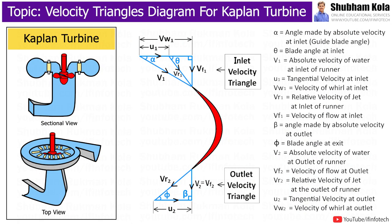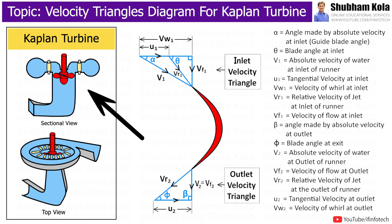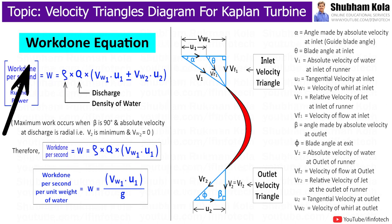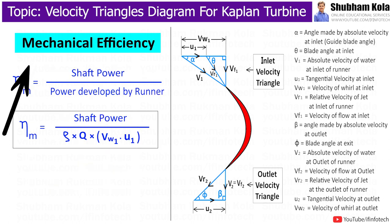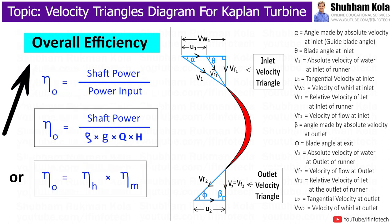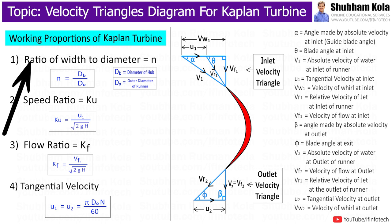In this video, we are going to discuss the velocity triangle diagram for Kaplan turbine, where we will formulate work done, hydraulic efficiency, mechanical efficiency, and overall efficiency of the turbine. We will also see the working proportions of Kaplan turbine.